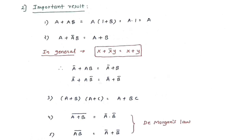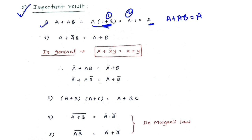In the previous slide we studied eight fundamental points. Now we will see some important results — make sure you mark all five Boolean expressions. Point one: A + AB. Take A common; the bracket contains 1+B, and 1 plus anything equals one, so A · 1 = A. Therefore A + AB = A.